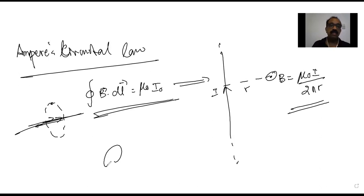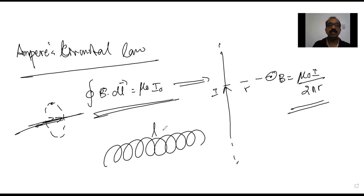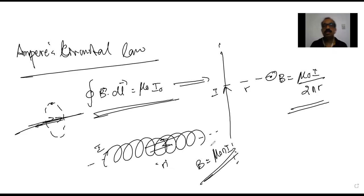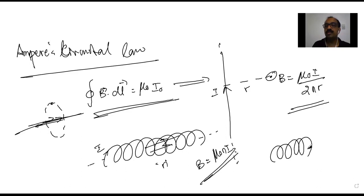Another case is the long solenoid — an infinitely long solenoid — where n (small letter) represents the number of turns per unit length, and I is the current. The equation for the magnetic field inside the solenoid is B = μ₀nI. At one end of the finite solenoid the field is μ₀nI / 2.